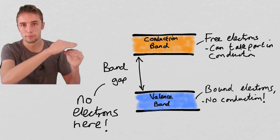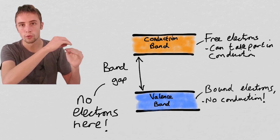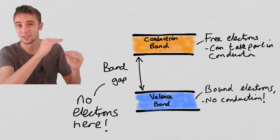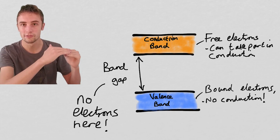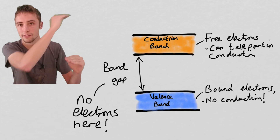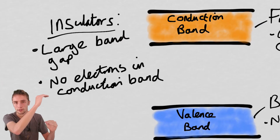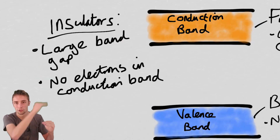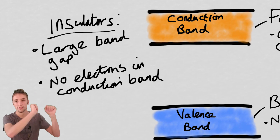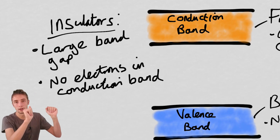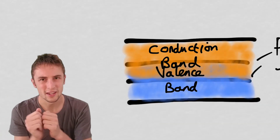Because of this large band gap, it's quite difficult — you need a lot of energy to take electrons from the valence band into the conduction band. Because it's quite difficult to do that, you have no electrons in the conduction band able to conduct, so it's an insulator.